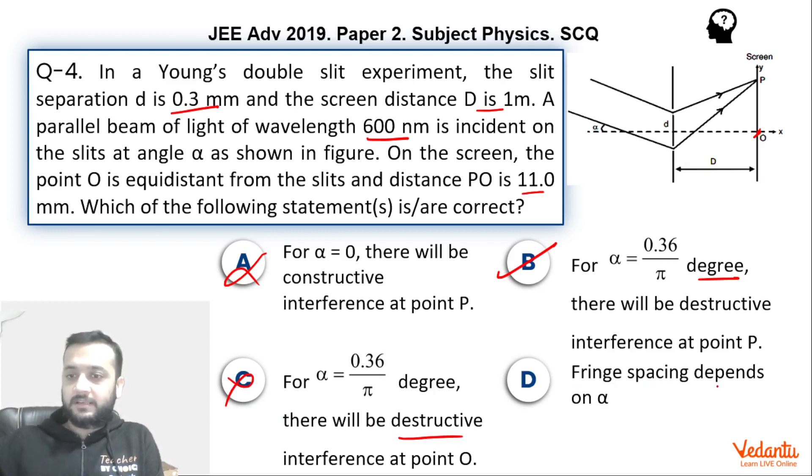Last option is fringe spacing depends only on alpha, which of course is wrong because fringe spacing will not depend upon alpha. Fringe spacing is lambda D by d. It actually depends upon lambda, it depends upon capital D, it depends upon small d. It is independent of alpha. Changing alpha will just shift the whole pattern. So you can say that central maxima will shift in one particular direction. If you change the values of alpha, but the fringe spacing is not going to change. So we can say that it is independent of alpha.